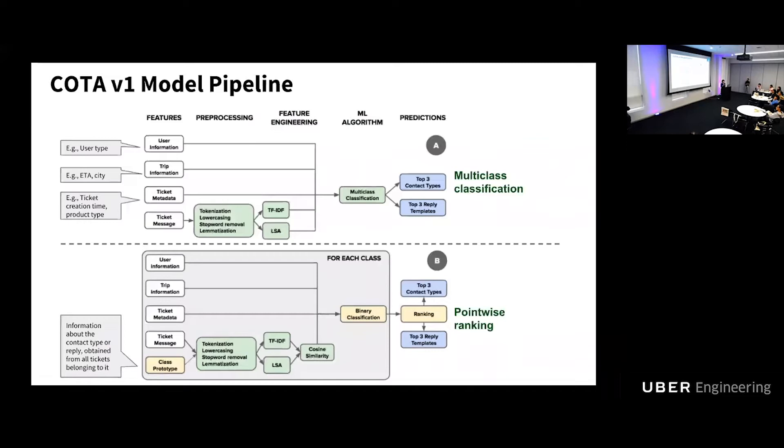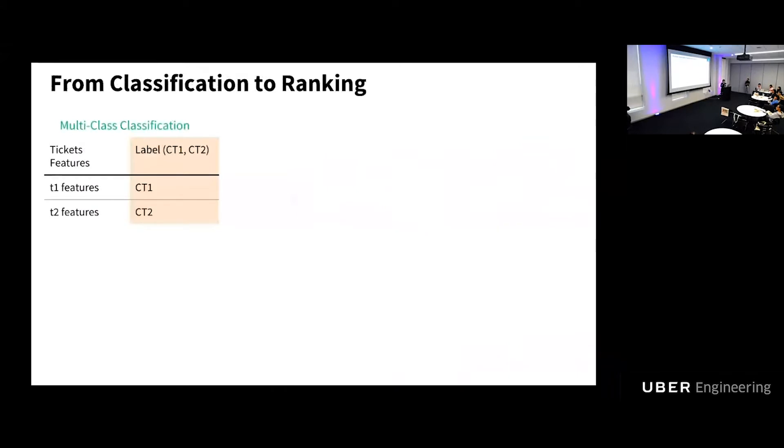I'm going to describe in detail how we do this in the next slide. But basically, this approach allows us to include information about the candidate content type or candidate reply template in the model's features, which makes the feature space more informative. So here's how we convert this multi-class classification model to a ranking approach. This is a typical setting of a multi-class classification model. Given the ticket, we firstly convert them into features, and the model is built to predict labels. It's content type 1 or content type 2. So in this case there are only two classes, content type 1 and 2, that's a very easy case. In our case, in reality, we have thousands of content types, which makes it difficult.